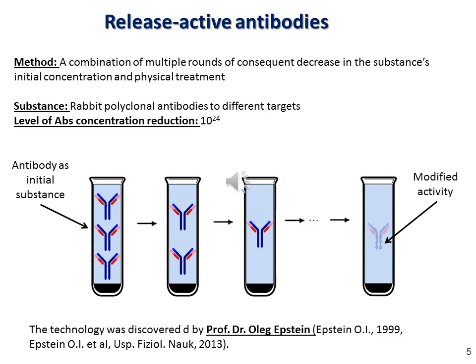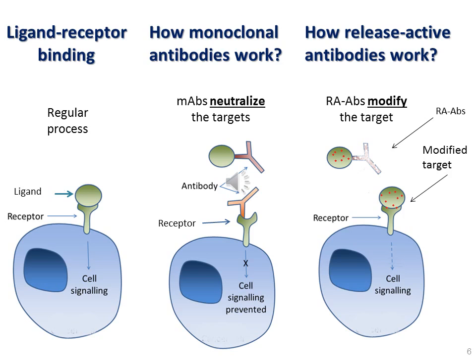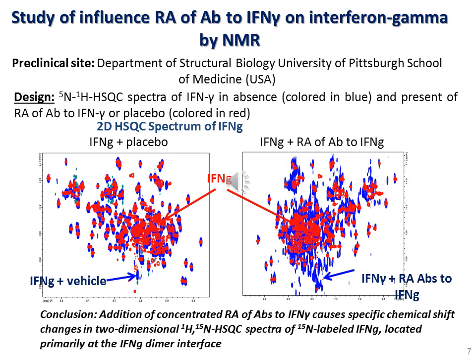The physical foundation of this process is under study at the moment, and I am going to tell you about the pharmacological features of such drugs. How do release active antibodies work? Regular monoclonal antibody-based drugs block the target, preventing the binding with receptors and other targets and respectively blocking possible signaling pathways. Release active antibodies do not neutralize their target but modify their activity, changing their ability to interact with their biological receptors. This idea comes from nuclear magnetic resonance experiments where it was shown that interferon gamma in the presence of release active antibodies to interferon gamma changes its conformation.